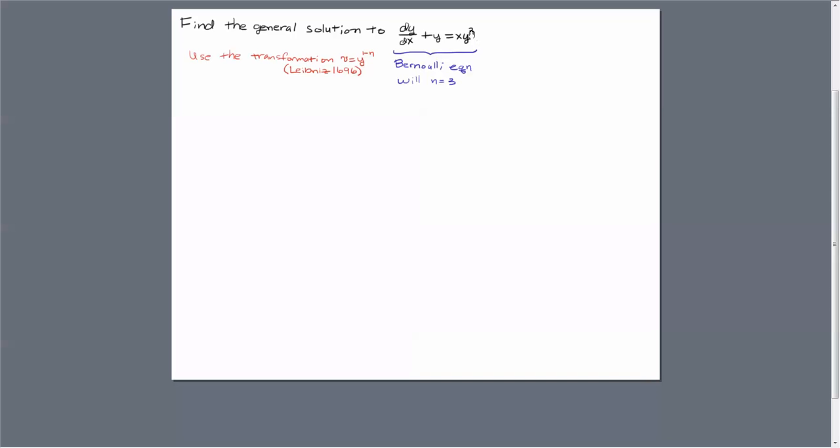So we can use the transformation of v equals y to the 1 minus n. This was derived by Leibniz back in 1696 to solve this equation. Instead of showing this to you in general, I'm going to show you this specific example where n equals 3.